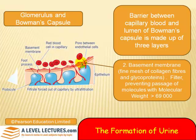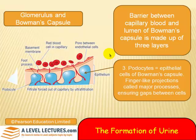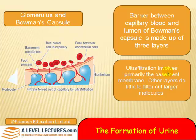The basement membrane prevents the passage of large molecules with molecular weights in excess of 69,000, so blood cells and larger proteins cannot get through. The third part are the podocytes — the epithelial cells of Bowman's capsule, with finger-like projections called major processes that create gaps between the cells for filtered substances to pass through. Most of the ultrafiltration involves the basement membrane; other layers do little to filter out larger molecules.